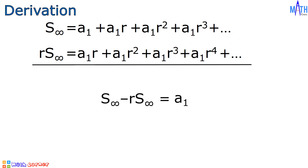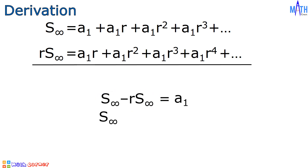Let us simplify. Let us factor out sum to infinity on the left side of the equation, and we are left with 1 minus r. Sum to infinity times the quantity 1 minus r is equal to a sub 1.